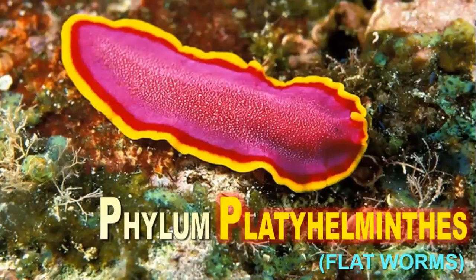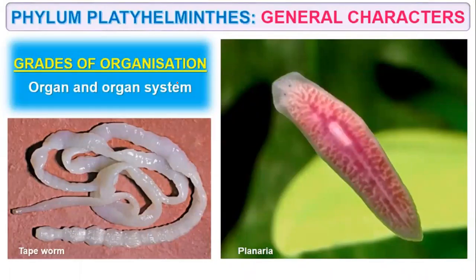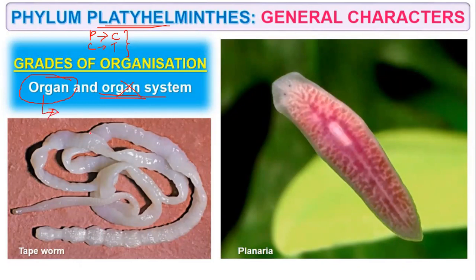Phylum Platyhelminthus is also known as flatworms because they have a dorso-ventrally flattened body surface. As we discussed, Phylum Porifera has cellular level of organization, Phylum Coelenterata has tissue level of organization, Ctenophora has tissue level of organization, and now Platyhelminthus has organ level of organization. In your NCERT also, it is mentioned as organ level of organization only.